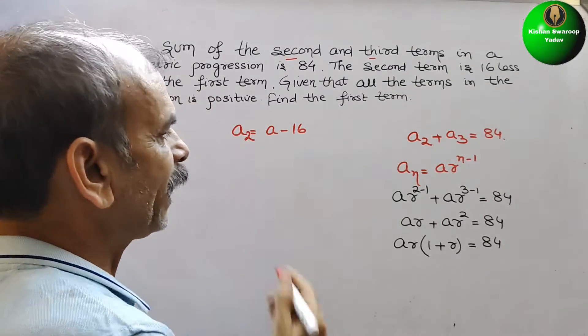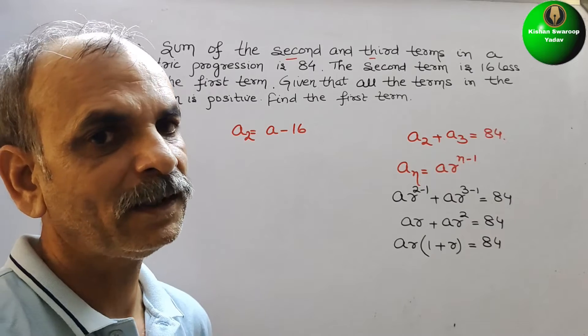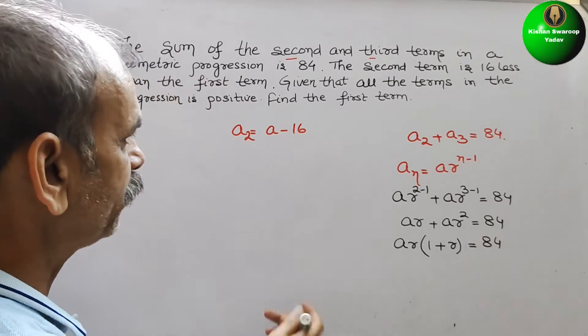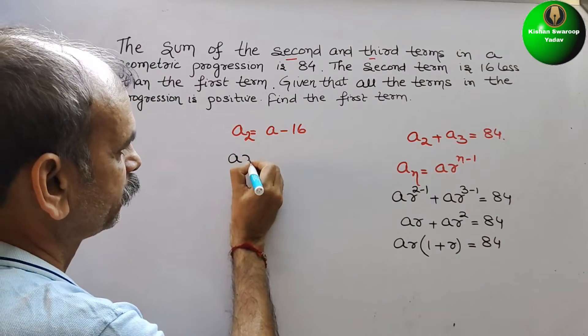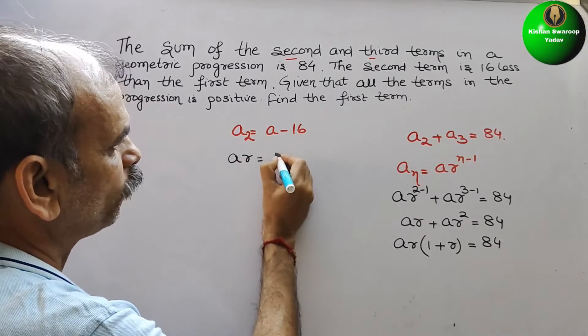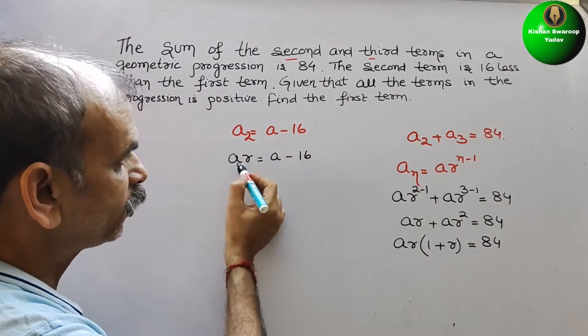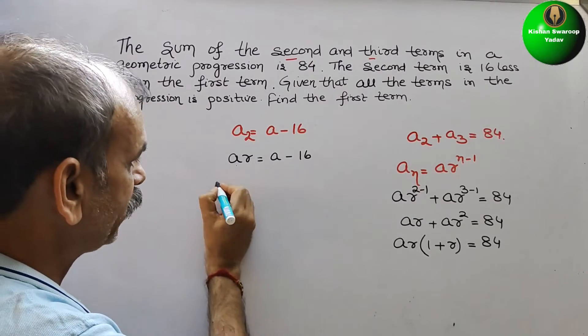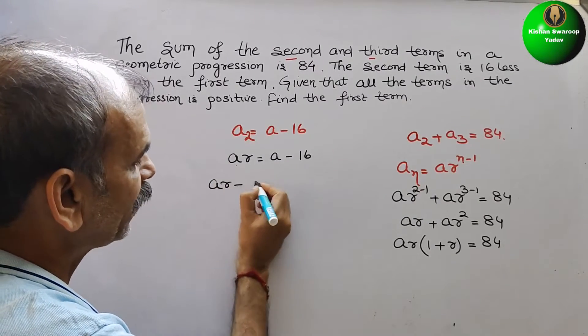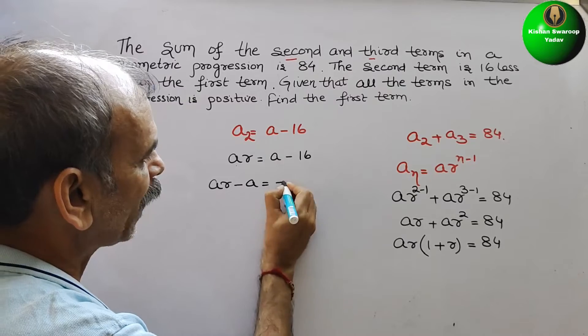So now again rewrite it. What we will get? ar is equal to a minus 16. Now bring this a to this side. What it will be? ar minus a is equal to minus 16.